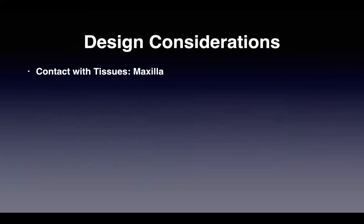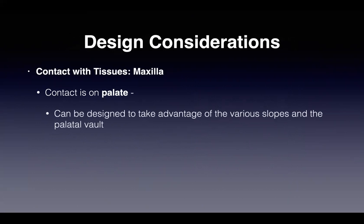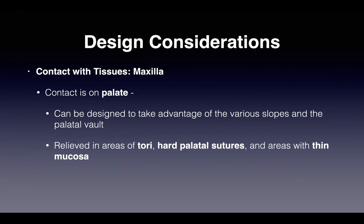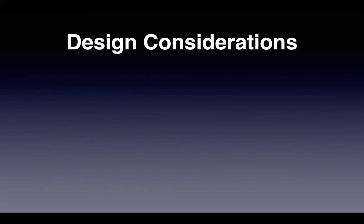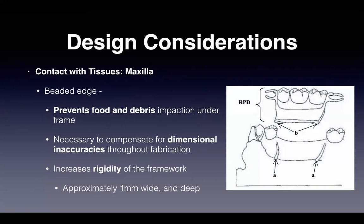Regarding contact with maxillary tissues, the major connector is designed to take advantage of the palate's slopes and valleys — the sagittal slope, palatal vault, and lateral and vertical slopes. This is the L-bar principle, whereby forces transmitted on more than one plane are counteracted more easily, maintaining greater rigidity. Maxillary major connectors are typically relieved in areas of tori, hard palatal sutures, and thin mucosa. Edges exposed to the tongue are beaded to ensure mucosal contact and prevent food and debris impaction underneath the frame.